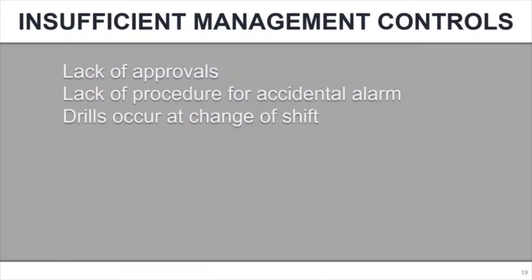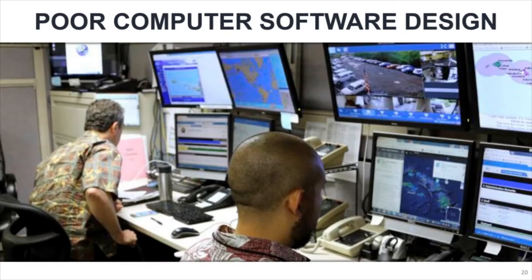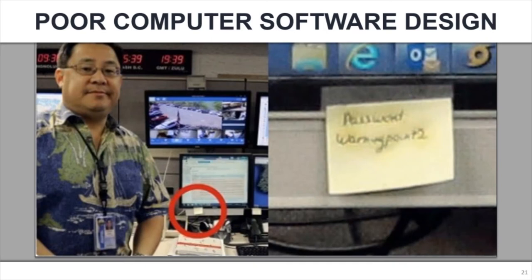On insufficient management controls: there was no requirement for a second approval before one person could broadcast the message to everybody, no clear procedure for rolling back an accidental alarm once sent, and drills were blamed for occurring at the start of a shift so no one was sure who was in charge once it shifted from drill to real situation. They also blamed poor computer software design. This is the terminal where all these messages come from — and notably, someone on Twitter once spotted that passwords for these sensitive machines were just taped onto the monitors on Post-it notes.